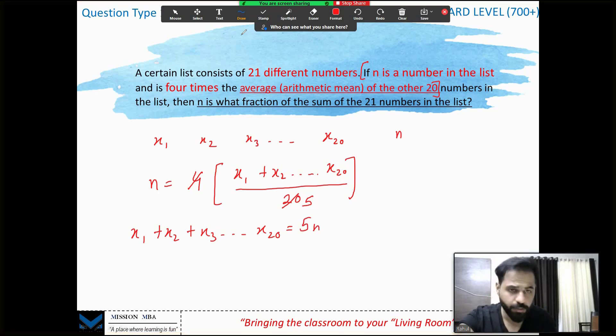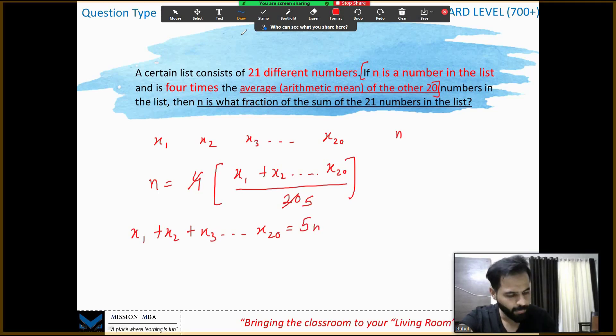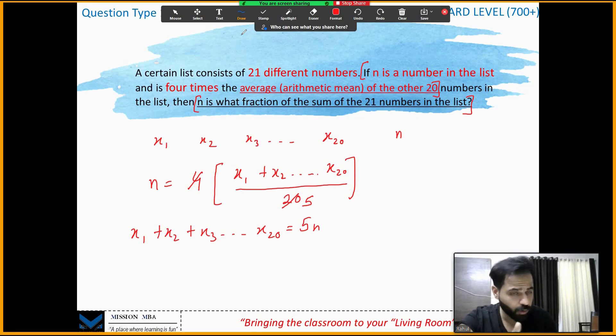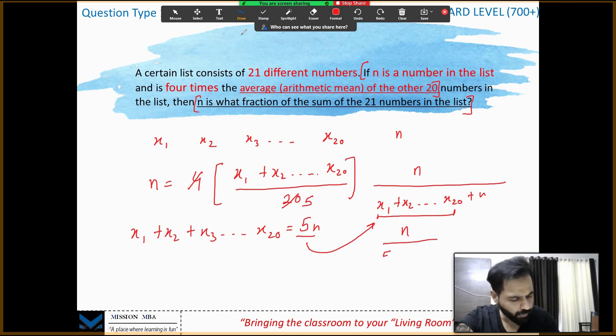That's it, three lines we're almost done. N is what fraction of the 21 numbers? Be careful, of the 21 numbers, not 20 numbers. So he's looking for n upon all the numbers: x₁ plus x₂ dot dot dot x₂₀ plus n. I know the value of this guys, this is nothing but n/4. Put it over here, what do you have? N upon n/4 plus n, n upon 5n/4, and we are done. 1 by 6, that's it.